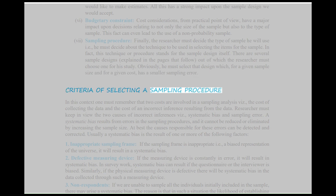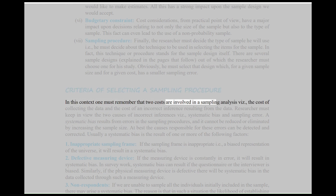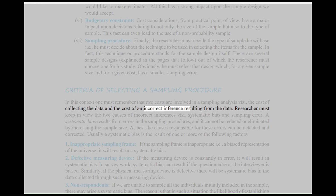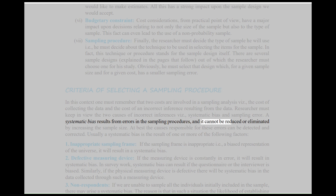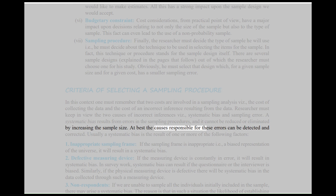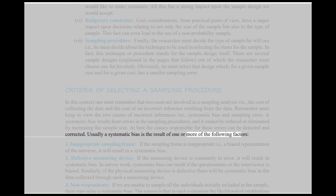Criteria of selecting a sampling procedure: One must remember that two costs are involved in a sampling analysis — the cost of collecting the data and the cost of an incorrect inference resulting from the data. The researcher must keep in view the two causes of incorrect inferences: systematic bias and sampling error. A systematic bias results from errors in the sampling procedures and it cannot be reduced or eliminated by increasing the sample size. Usually, a systematic bias is the result of one or more of the following factors.